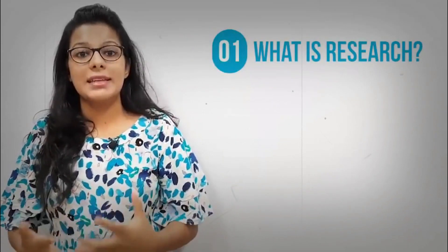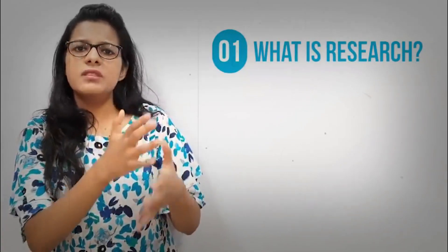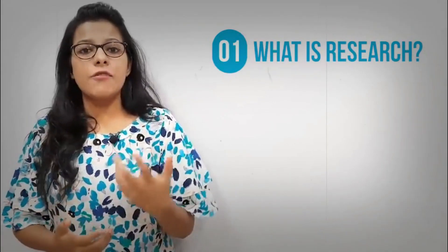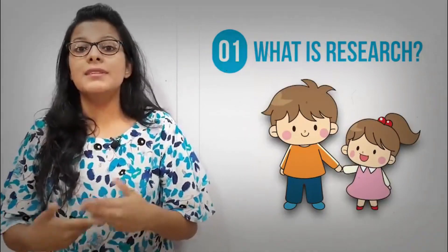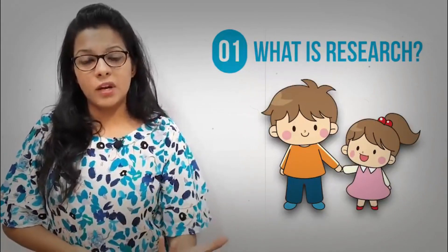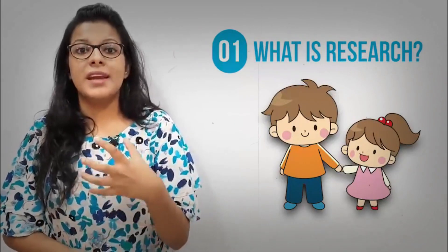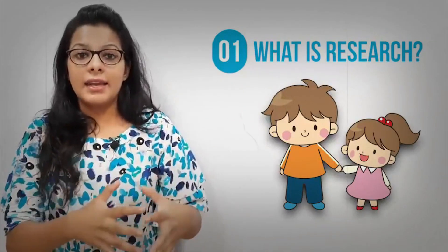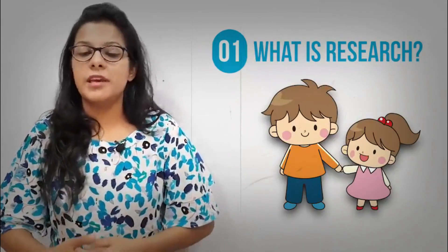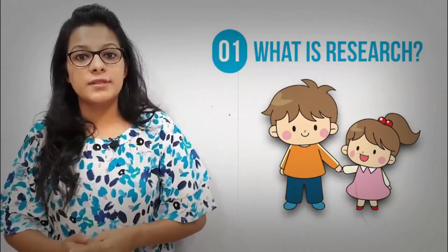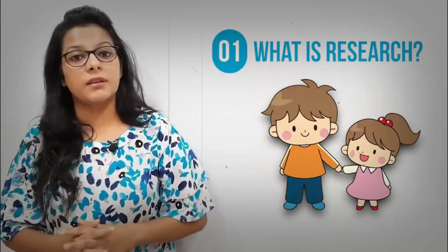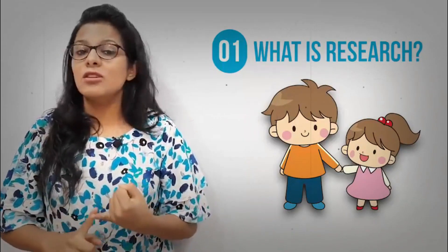The very first thing you must study about research is: what is research and what is its nature? Research is a very simple thing — it is a systematic and logical procedure in order to get answers to certain questions. For example, I might have a question: who is more responsible, elder siblings or younger siblings? In order to get an answer, I will undertake a research where I take a lot of elder and younger siblings and research which shows the most responsible behavior.